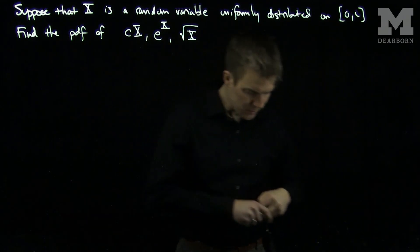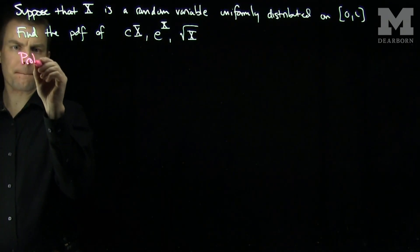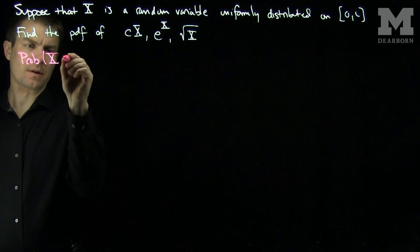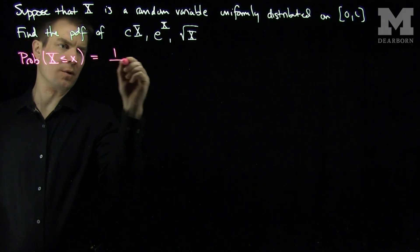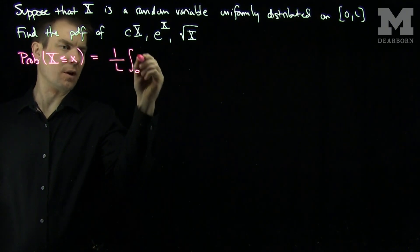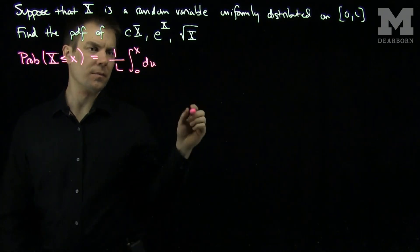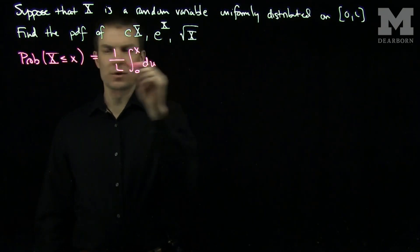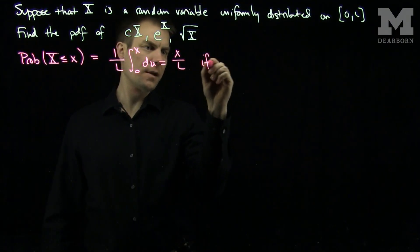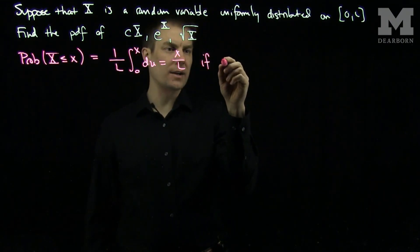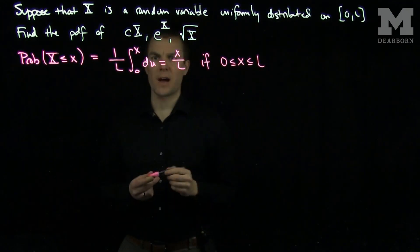We can note that the probability that X is less than or equal to x is 1 over L times the integral from 0 up to x of du, which is just x over L, if x is between 0 and L. So if x lies in the interval between 0 and L, this formula is valid.